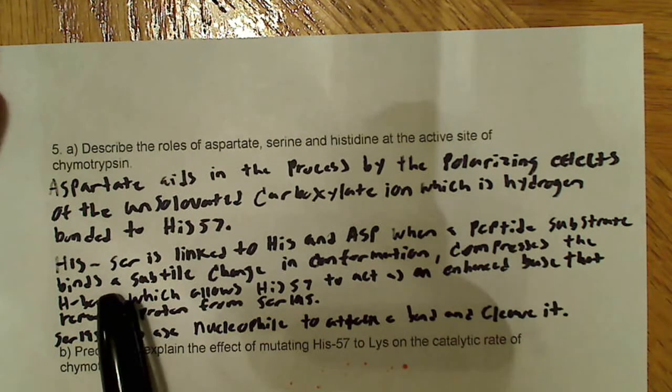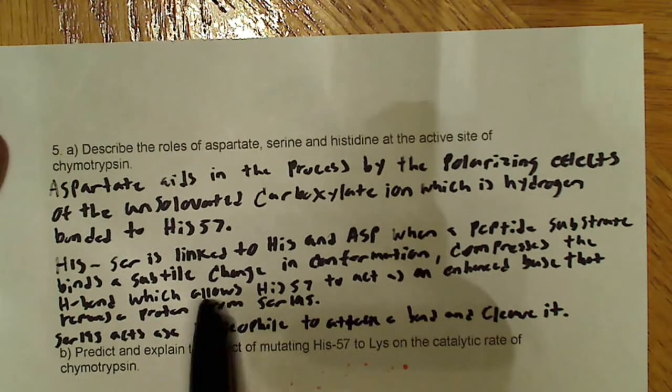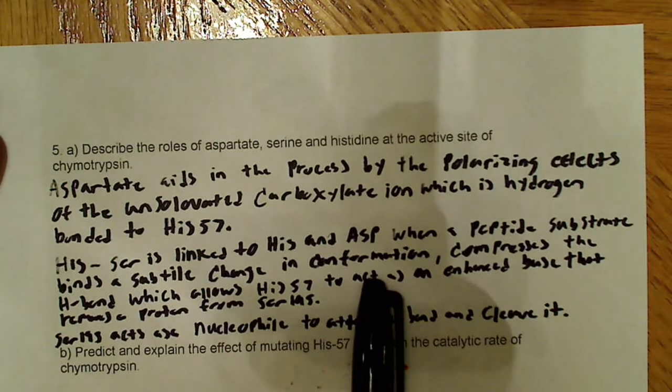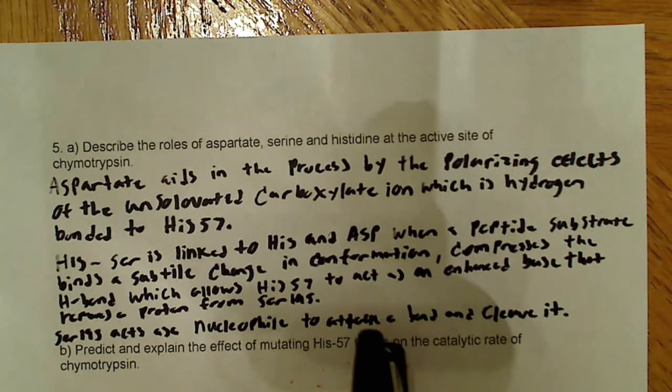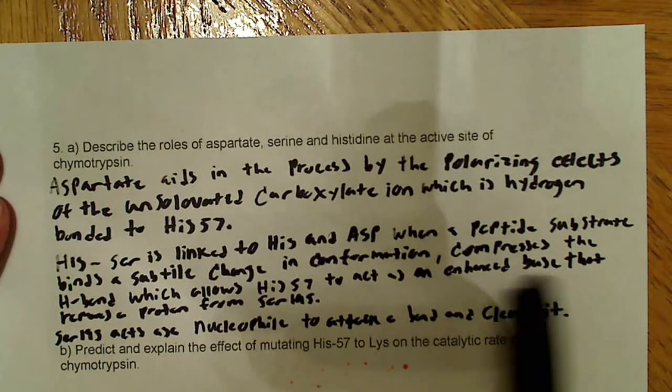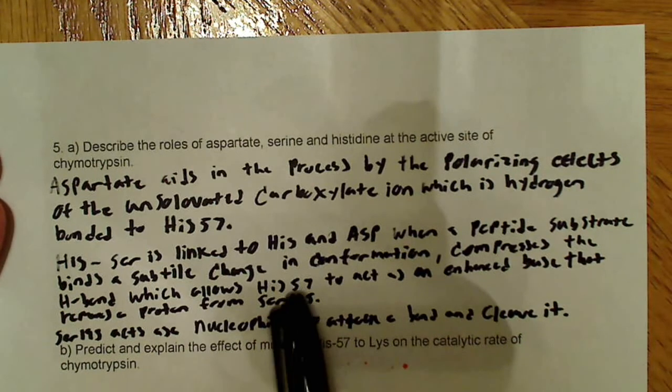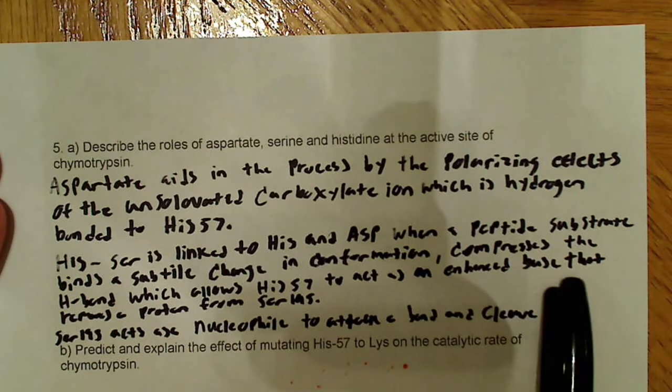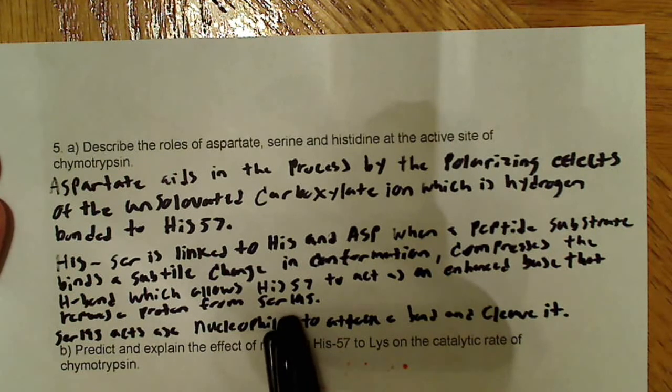When a peptide substrate binds to the active site, a subtle change in conformation compresses the hydrogen bond, which allows histidine 57 to act as an enhanced base that removes a proton from serine 195. We saw that a lot in previous videos. I talked about subtle changes in conformation from binding allosterics or from binding oxygen to hemoglobin.